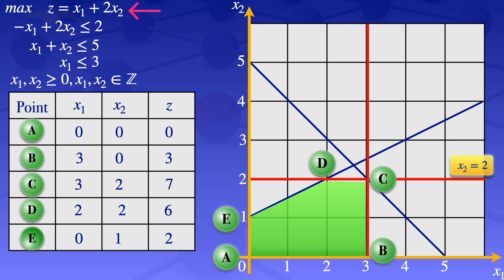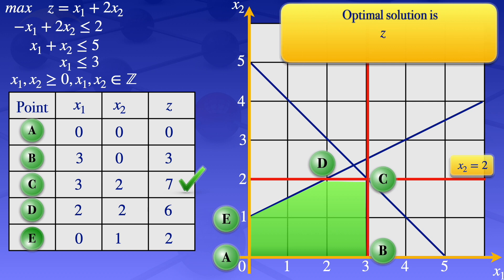Since this is a maximization problem, we look for the largest value in the z column, which is 7. So the optimal solution is z = 7, occurring when x1 = 3 and x2 = 2. This is the optimal solution because x1 and x2 now have integer values as required by the integer programming constraint.